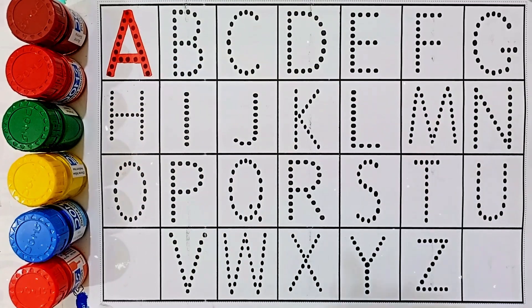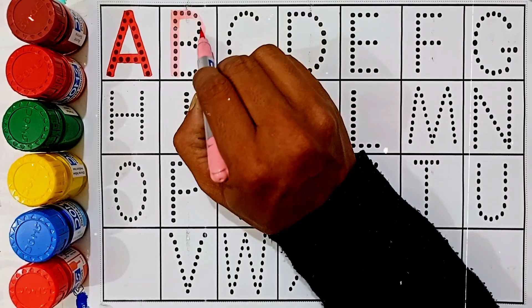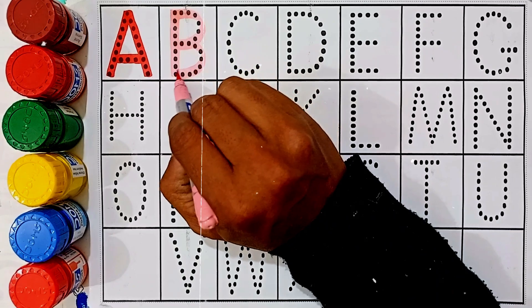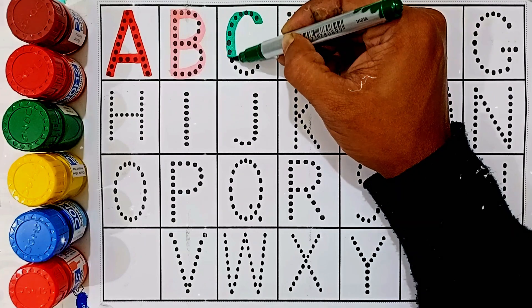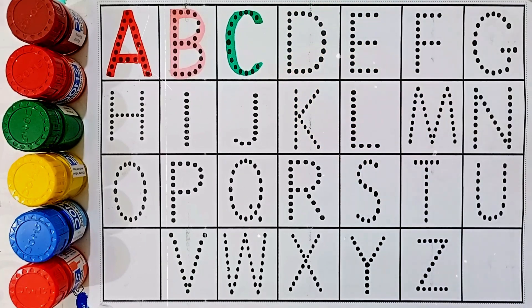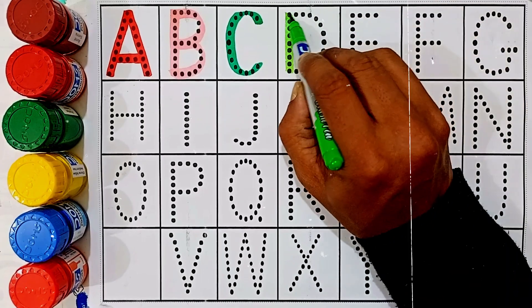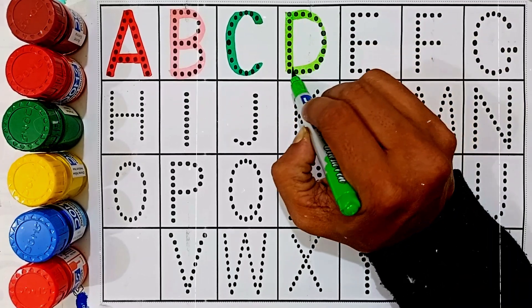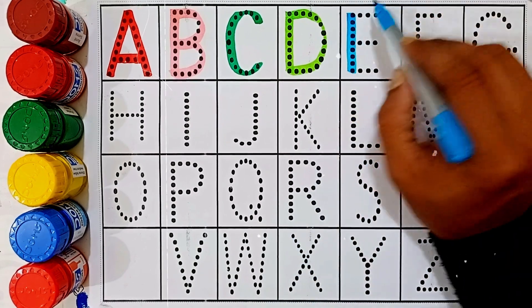A, A for apple, A for apple. B, B for banana, B for banana. C, C for cat, C for cat. D, D for dog, D for dog.